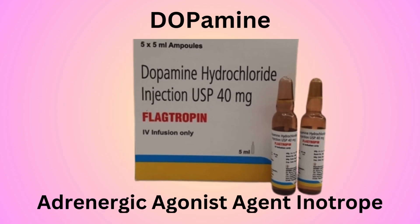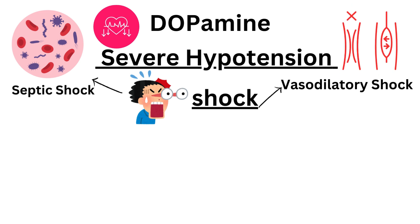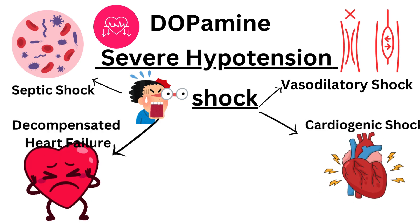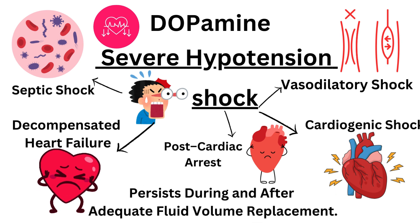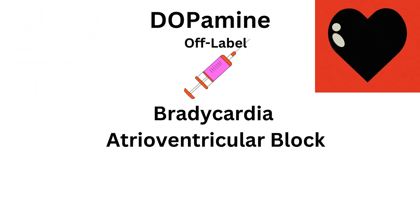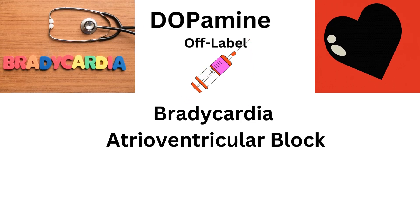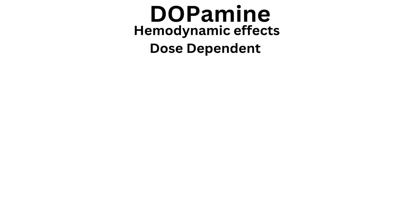Dopamine is an adrenergic agonist and inotrope used for the treatment of severe hypotension or shock, such as septic shock and other vasodilatory shock states, cardiogenic shock, decompensated heart failure, and post-cardiac arrest that persists during and after adequate fluid volume replacement. Off-label use includes management of bradycardia and cardiac conduction delay, including symptomatic bradycardia with altered mental status, hypotension, and shock unresponsive to atropine or pacing. The hemodynamic effects of dopamine are dose-dependent.